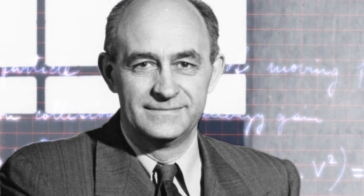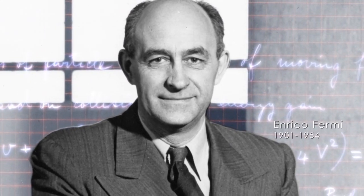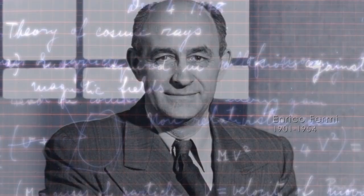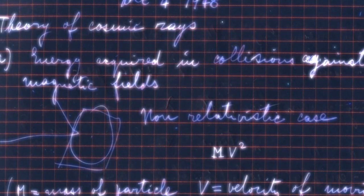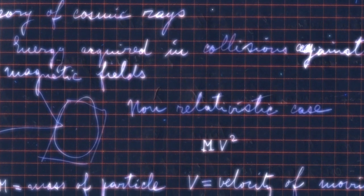In 1949, physicist Enrico Fermi worked out how what he called magnetized clouds could accelerate cosmic rays. Later studies showed that a variant of his method, called Fermi acceleration, worked especially well in supernova remnants.